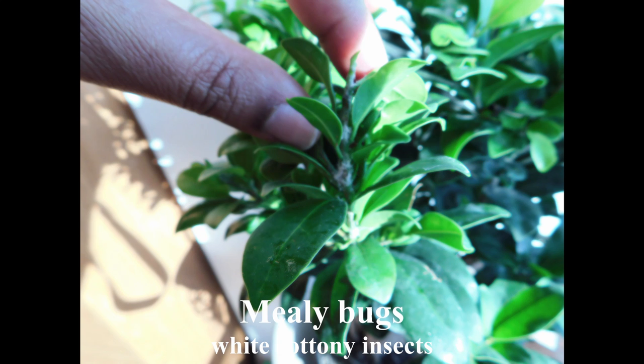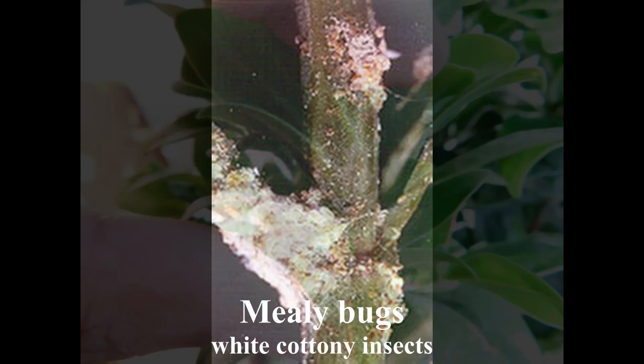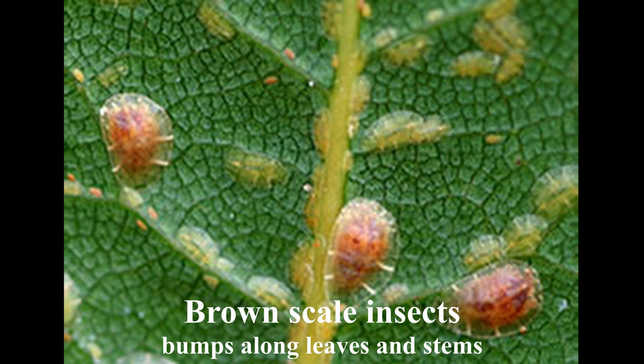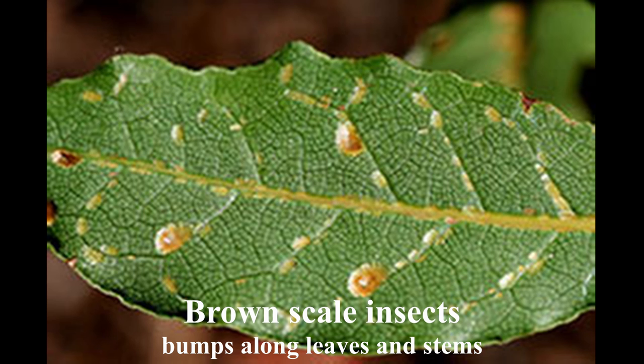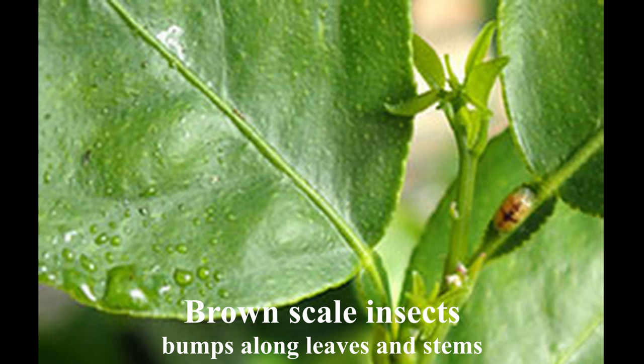Mealybugs look like white cottony or waxy insects that feed on leaves and branches. Adult mealybugs are immobile and very noticeable, but the tiny young called crawlers are hard to see. They do move around and spread out to other parts of the plant. Brown scale insects are cousins to mealybugs and are found in similar feeding areas. The adults are also immobile and appear as brown scaly bumps along the stems and leaves. Their young are also called crawlers and are hard to see but move about the plant.